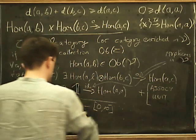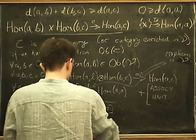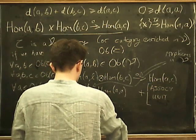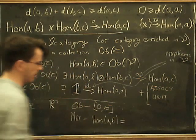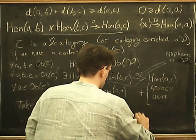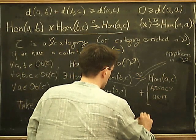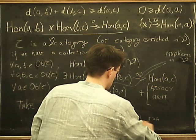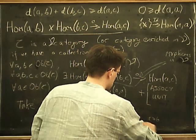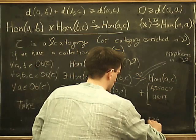So we can take R+ to be the category where the objects are the positive numbers plus infinity, and the morphisms, so hom(A,B), we just want it to be a poset. So this is going to be equal to, let's just say, one element if A is bigger than or equal to B, and is the empty set, can't write down here, otherwise.